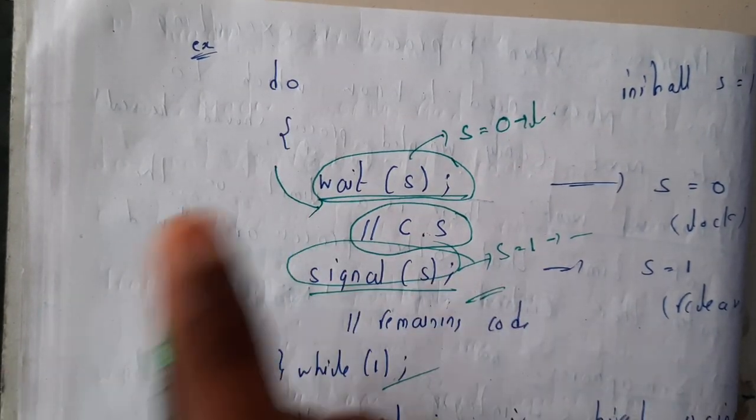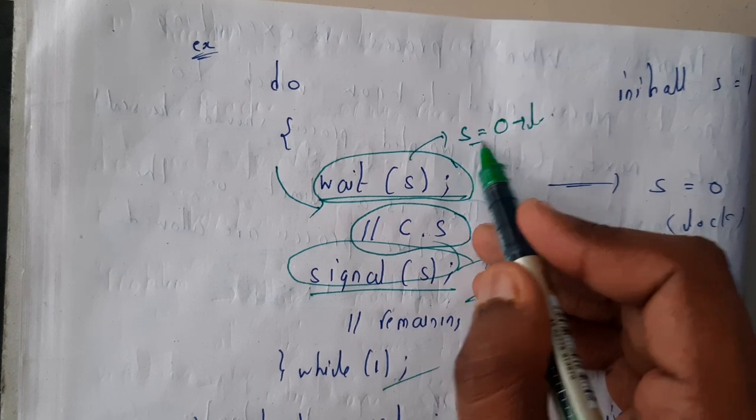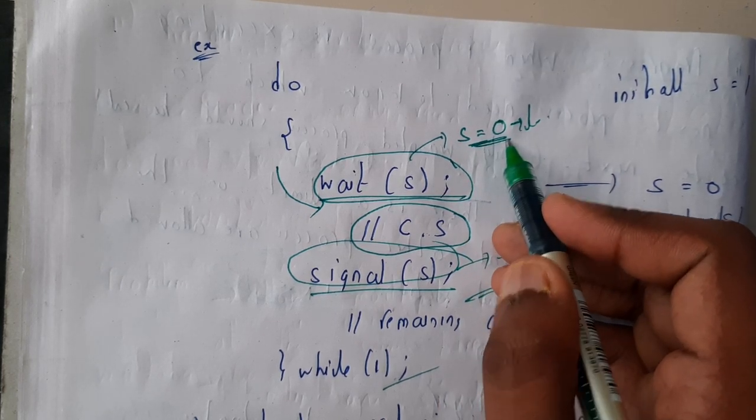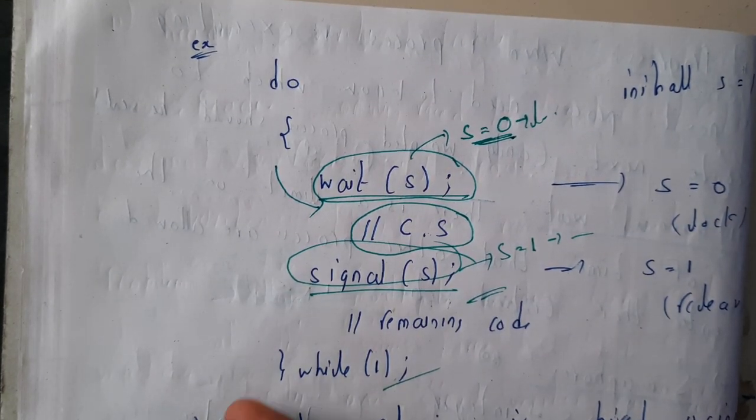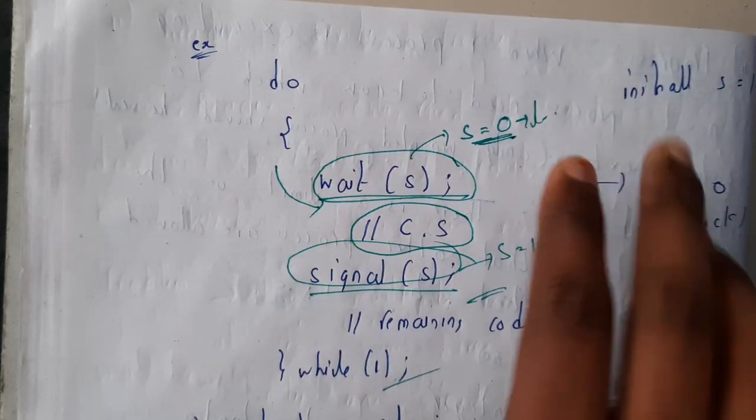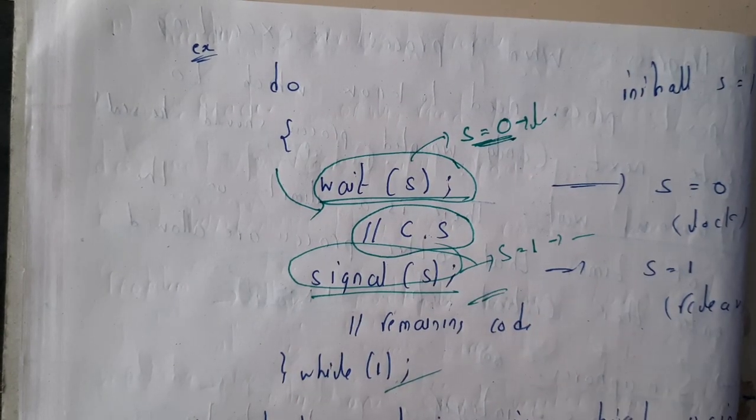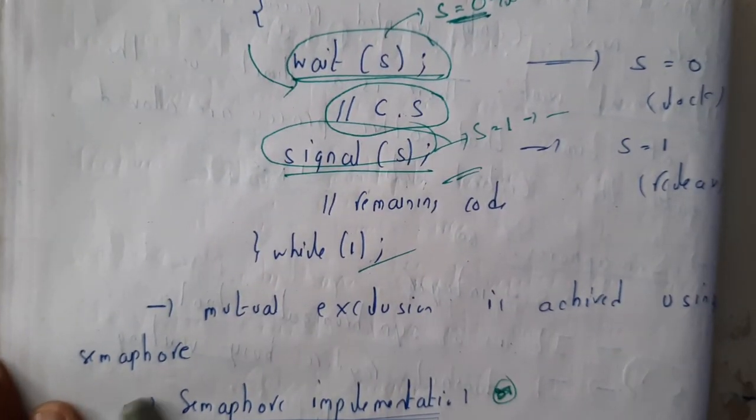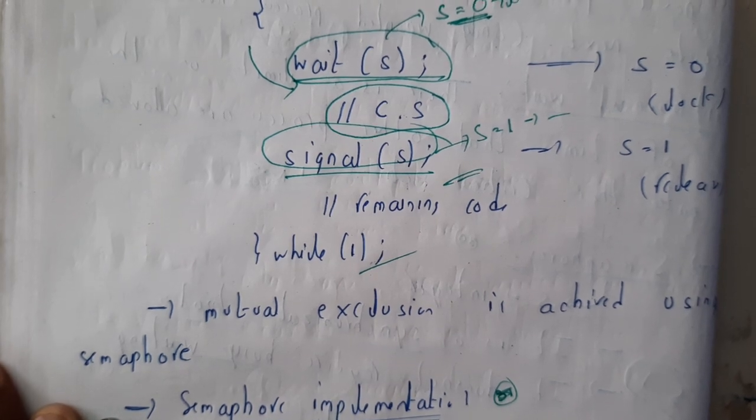After that, the while loop - mutual exclusion is achieved using semaphores. Now only one process can access. Whenever it notices that s is zero, it is indirectly locked, so the next process will not be entering. This is semaphores. In the next tutorial, we will be going through the implementation of semaphores. Thank you.